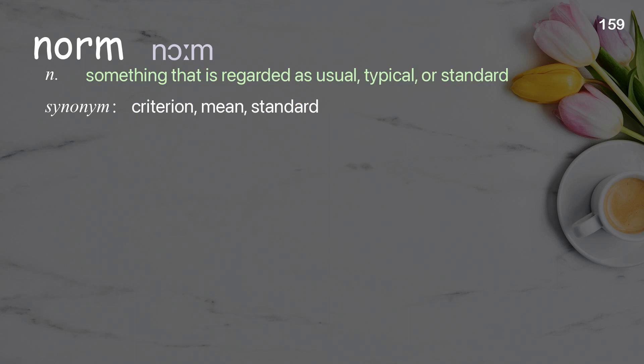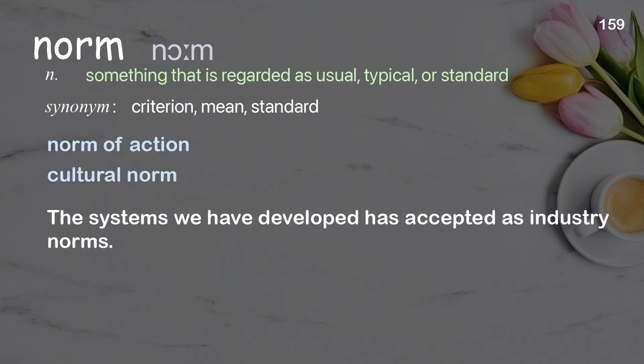Norm: something that is regarded as usual, typical, or standard. Examples: norm of action, cultural norm. The systems we have developed have been accepted as industry norms.